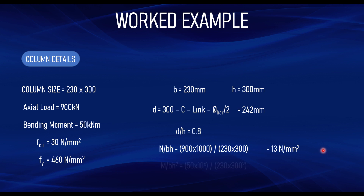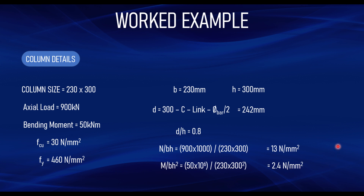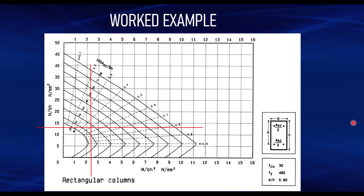Next, evaluate M/bh²: M is 50 kNm, converted to Newton-millimetres by multiplying by 10⁶, giving 50 × 10⁶ Nmm. Divide by b (230) and h² (300²): M/bh² = 50 × 10⁶ / (230 × 90000) = 2.42 N/mm². Now we have all three parameters: fcu = 30, fy = 460, d/h = 0.8. We select the column chart with exactly these values — fcu 30, fy 460, d/h 0.8.